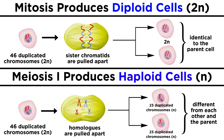So meiosis one differs from mitosis in that the sister chromatids of an individual chromosome are not getting pulled apart. It is a pair of homologous chromosomes that are getting pulled away from each other after having exchanged some genetic material. This is why the daughter cells are haploid — because each of them has only half the genome, with only one chromosome from each pair of homologs.